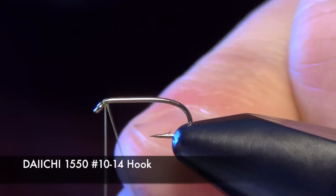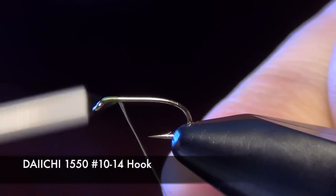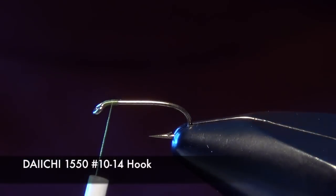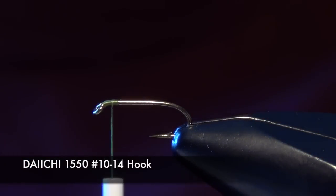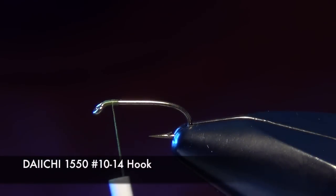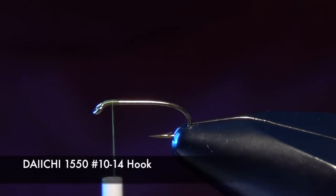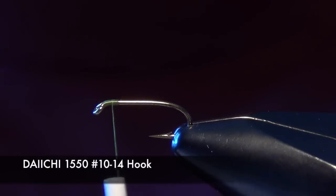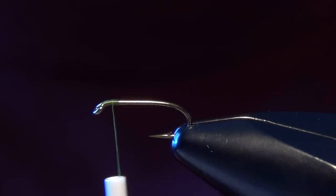In this video we're going to tie a small stonefly nymph called the Runt Stone. I'm going to start off with a Daiichi 1550 nymph hook in a size 10, 12, or 14. This fly we tie really small, very similar to the rubber legs, same principle, just all scaled down.